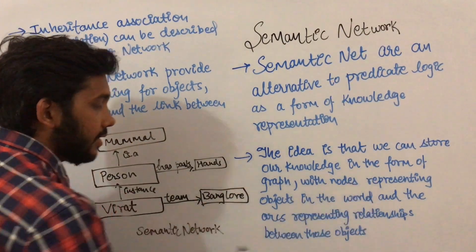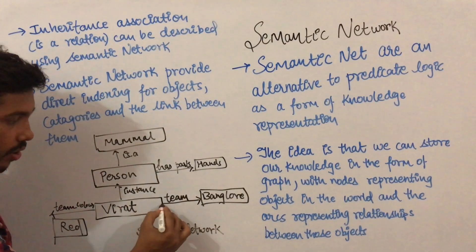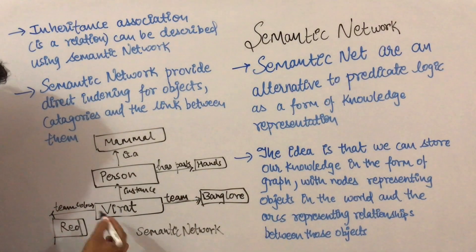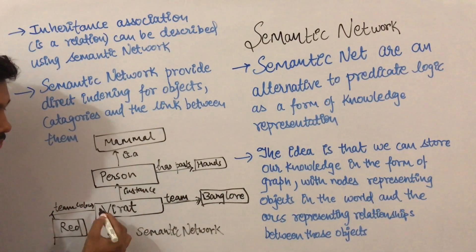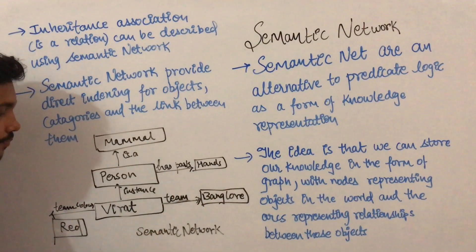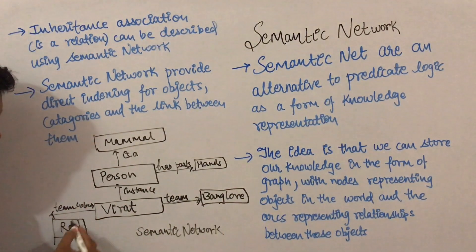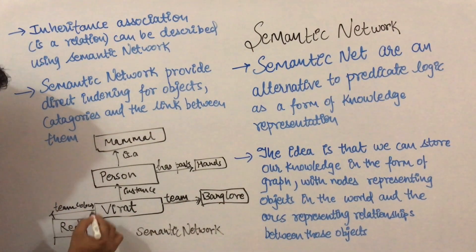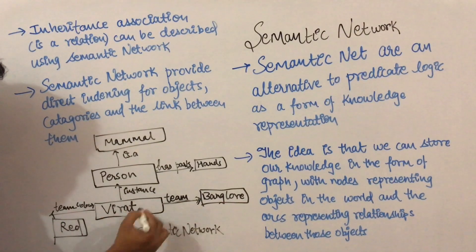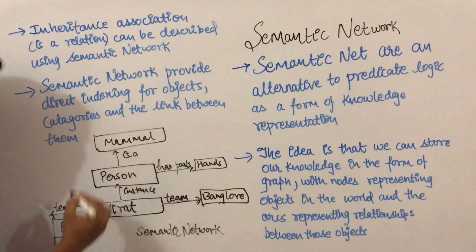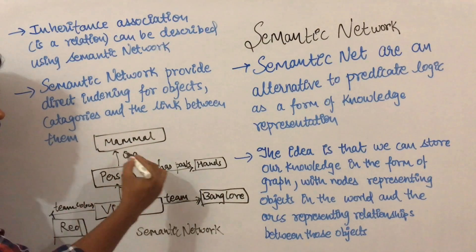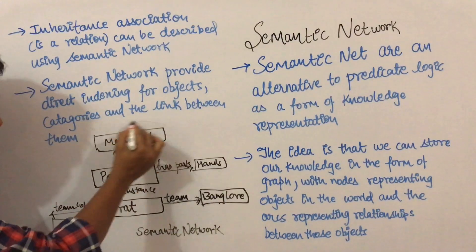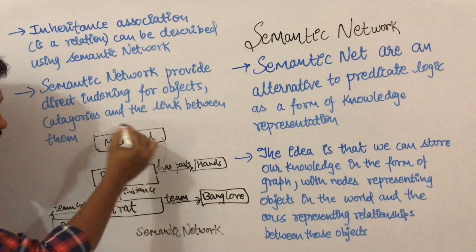We represent real-world objects with nodes, and arcs represent the relationships between those objects. For example, Virat is an object, Virat's team color is red — that is one relationship. Virat is an instance of person; person is another object. Person has part hands, and person is a mammal.